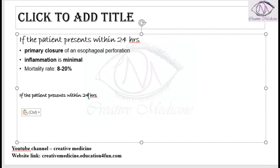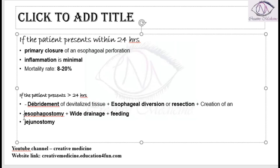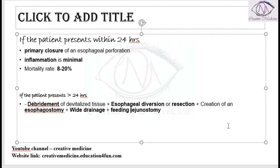If the patient presents after 24 hours, first and foremost we should do debridement of the devitalized tissue. Debridement is done first, followed by esophageal diversion and resection, with creation of an esophagostomy.